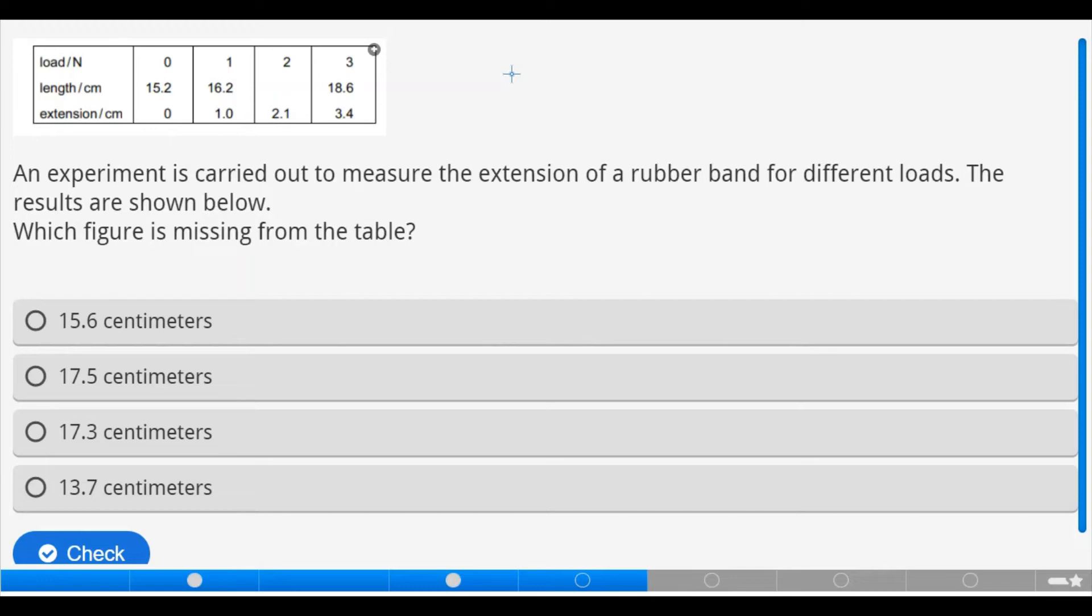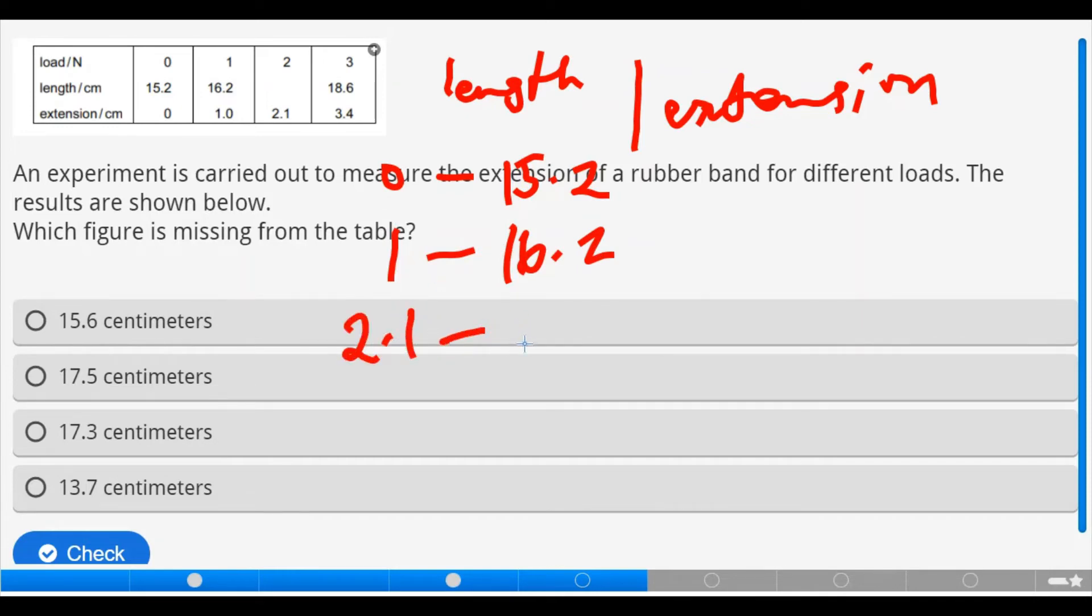Extension, if we should look at length and the other side we look at extension. Now for the first extension we have zero and our length is 15.2. For the next extension we have length is 16.2. Now here we have 2.1 but we don't know the value of the length, so let's call it x. And for the last one we have 3.4 in relation to the length 18.6. So this will require us to solve an equation. And how do we do that?